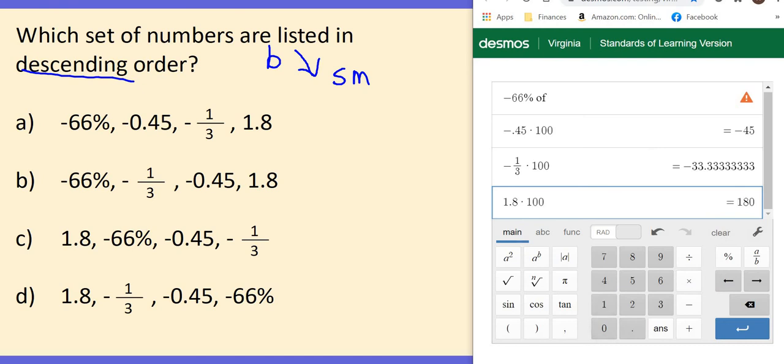All right. So let's look at this. We want to start with the biggest number. We know our negatives are not the biggest number. So we've got to start with 1.8. Okay? So that means these two are out. So it's got to be one of these. So let's look at our next number. We've got a negative 66, a negative 45, and a negative 33. And you've got to remember when you're thinking about negative numbers, they're going backwards. So if we're going from biggest to smallest, we want the biggest negative number, which is going to be negative 33.3, which is negative 1 third. So it looks like this is going to be our answer here.